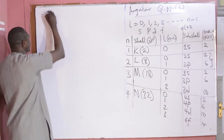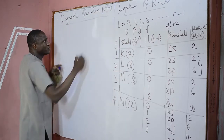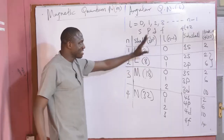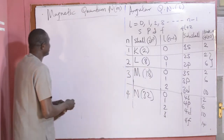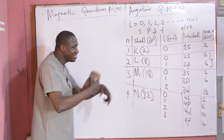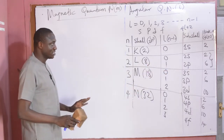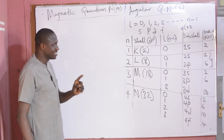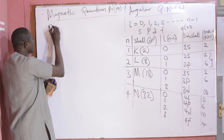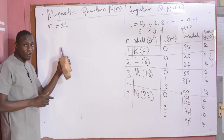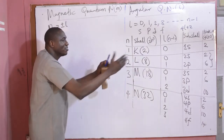Now the third quantum number is the magnetic quantum number, represented as M or M subscript L. This indicates the number of orbitals that can be found in a particular sub-shell — a sub-shell might contain more than one orbital. The magnetic quantum number also tells us the degeneracy of sub-shells into orbitals, and the only sub-shell without degeneracy is S sub-shell, because there is only one orbital found in it. The magnetic quantum number takes values of plus or minus L, from plus L down to minus L.